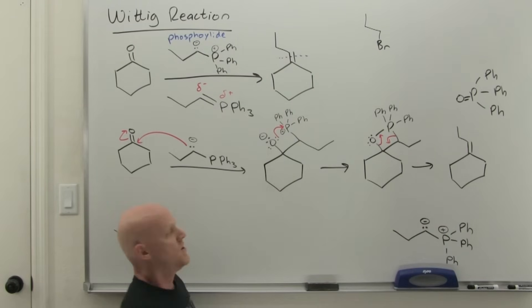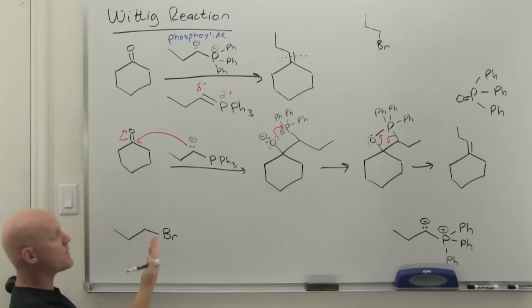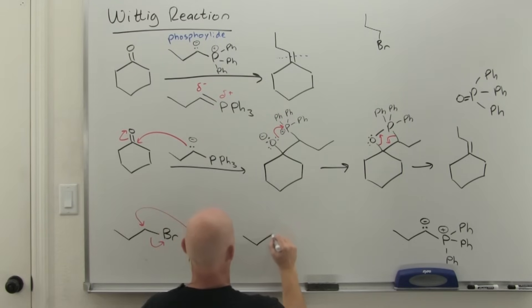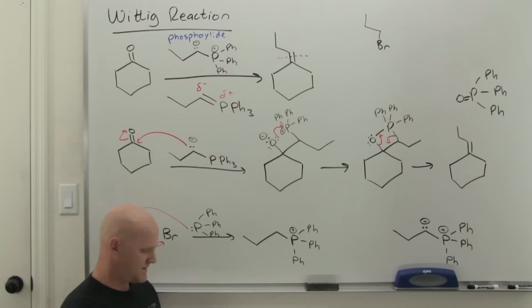We've got a lovely alkyl halide we want to turn ultimately into our phospho-ylid here. The question is how do we get there? It turns out the first step is just going to be an SN2 reaction, and that's why we wanted the least hindered alkyl halide possible—in this case a primary halide, that's fantastic. What we're going to use here is phosphorus bonded to three benzene rings, three phenyl groups. We call this triphenyl phosphine. He's just going to come and do backside attack on the carbon with a leaving group, kick off that leaving group.